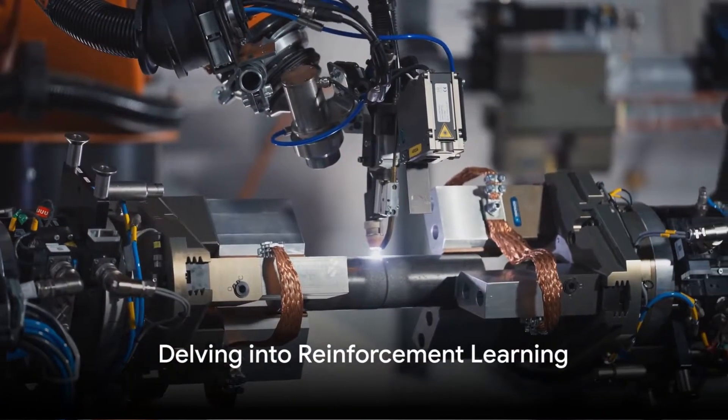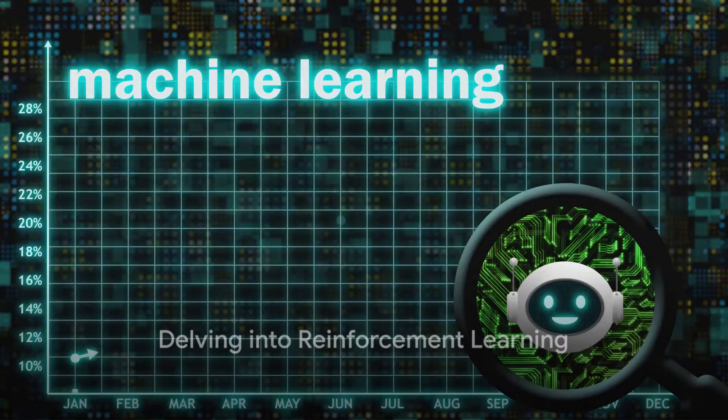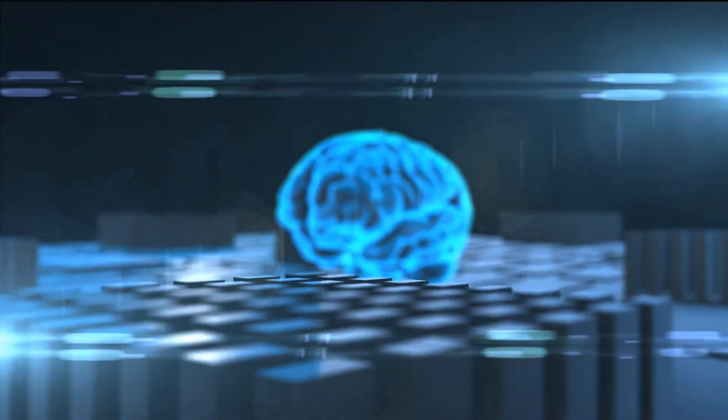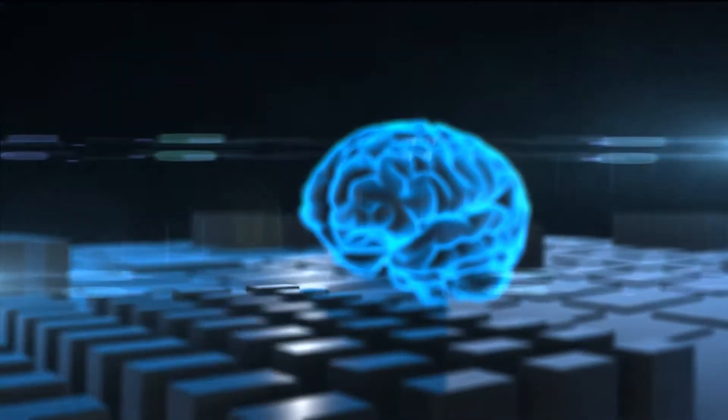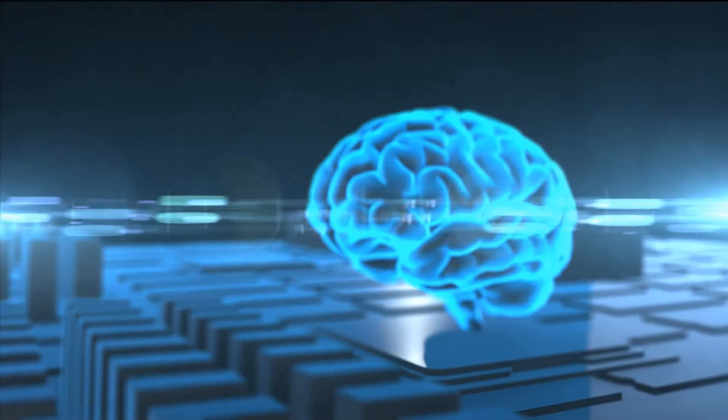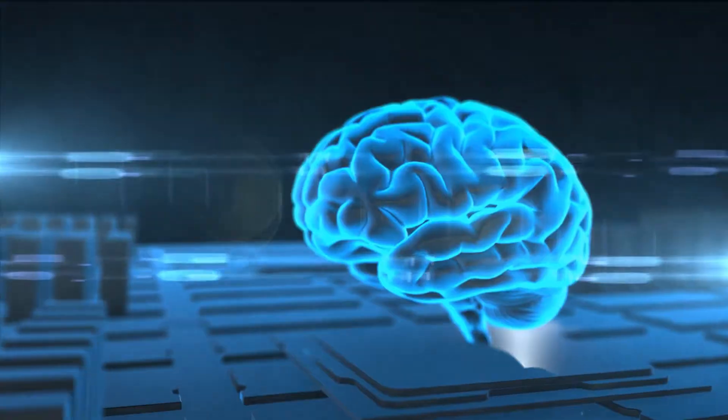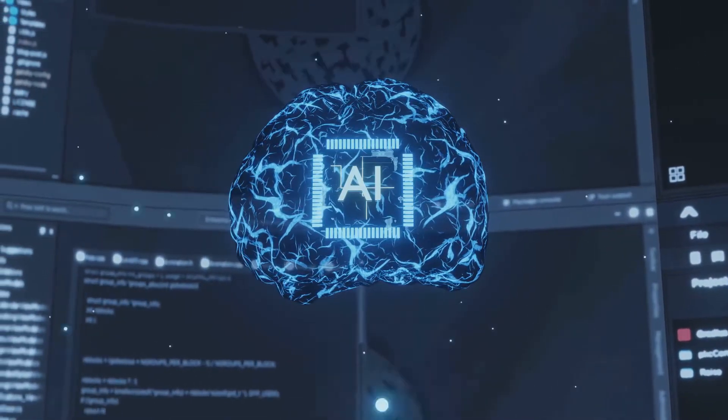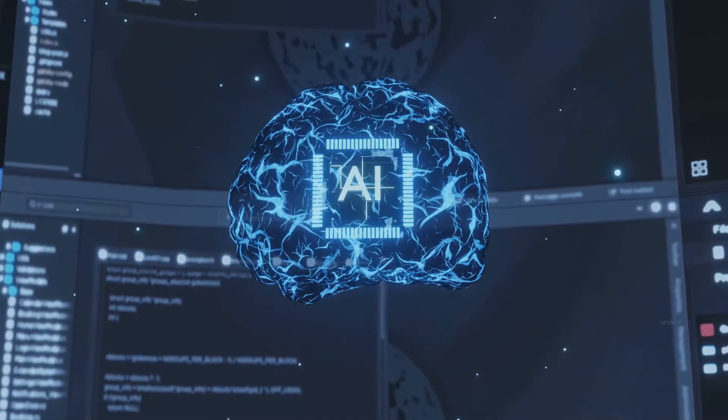Now, have you ever wondered how these machines learn? The secret ingredient is something called reinforcement learning. This technique is a type of machine learning where an agent learns to make decisions by taking actions in an environment to achieve a goal. The agent is rewarded or penalized for its actions, and over time, it learns to make the best decisions that will yield the highest rewards.